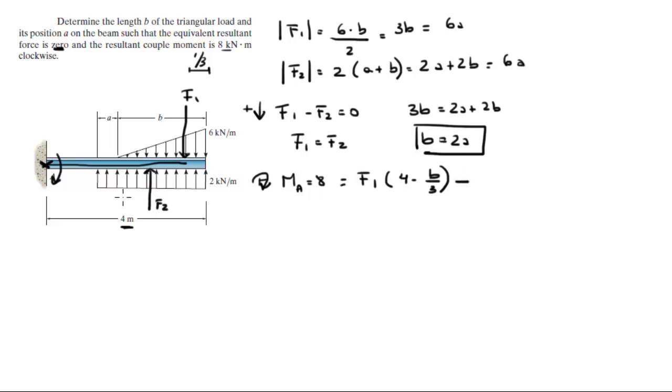Minus, because F2 is trying to create a clockwise moment, F2 times, where is F2 being applied at, 4, because this is the distance, minus half of the length of the rectangle, so it will be 4 minus, the length of the rectangle is A plus B divided by 2.